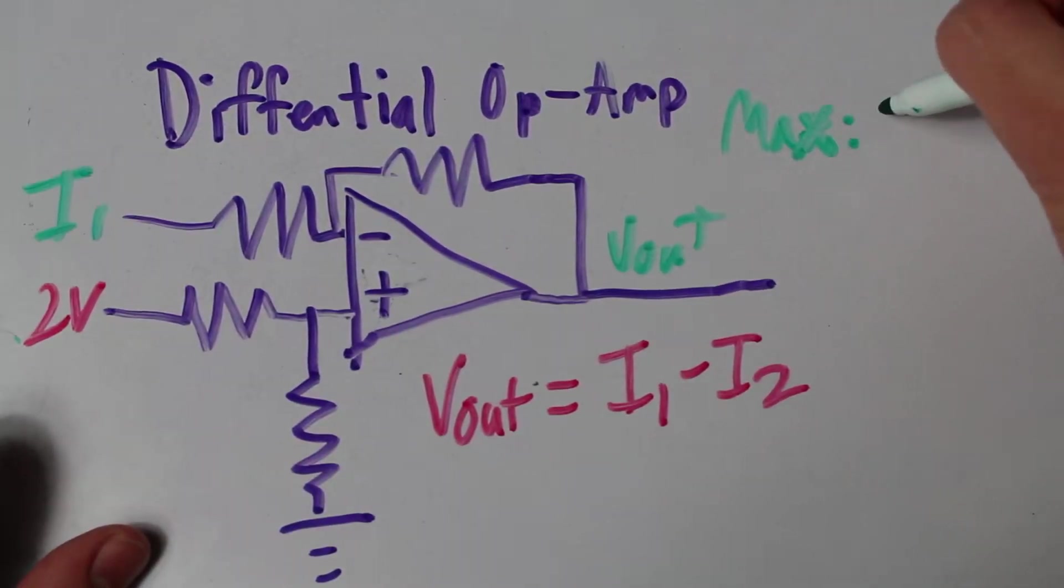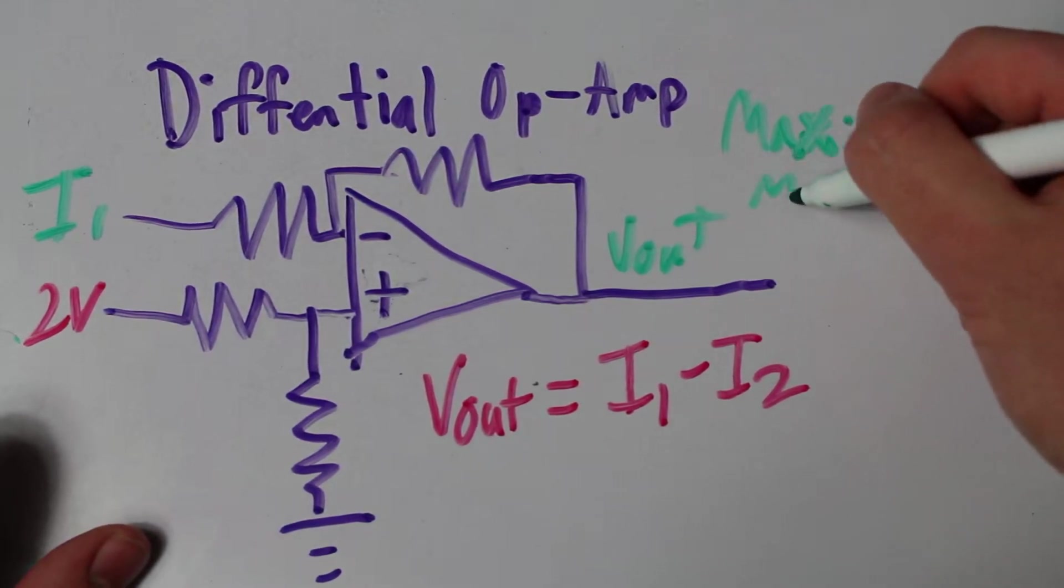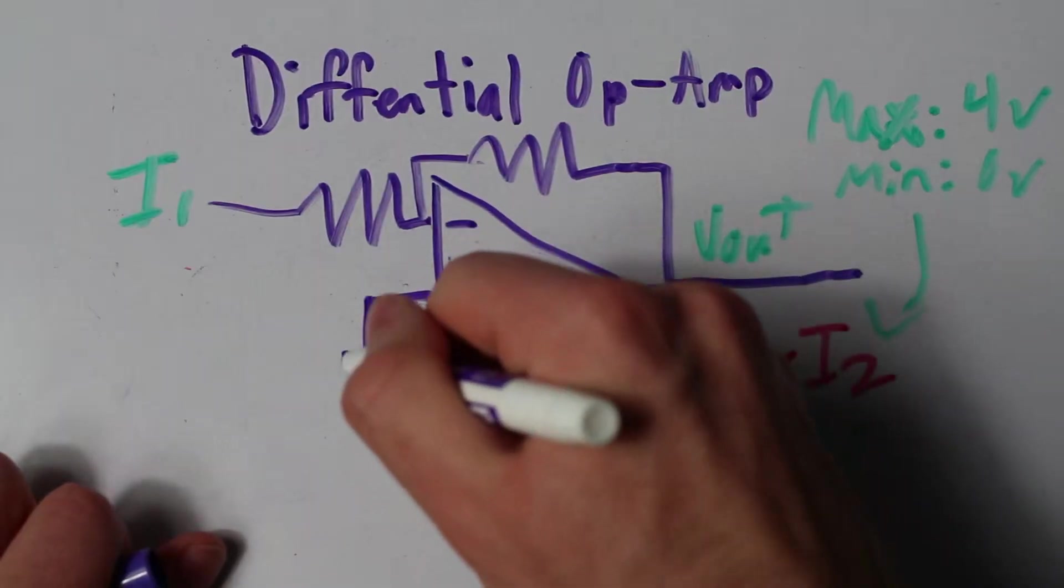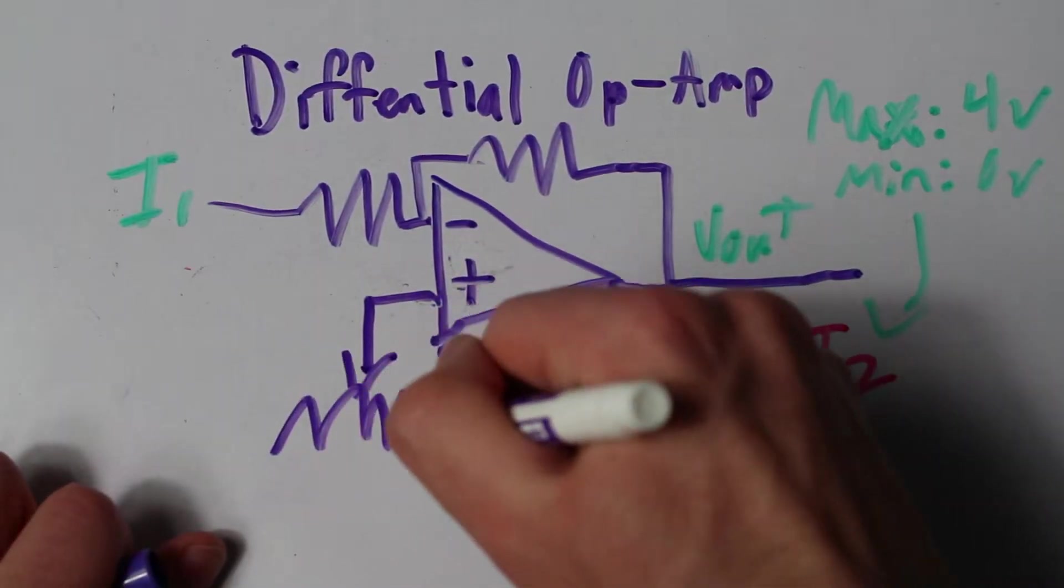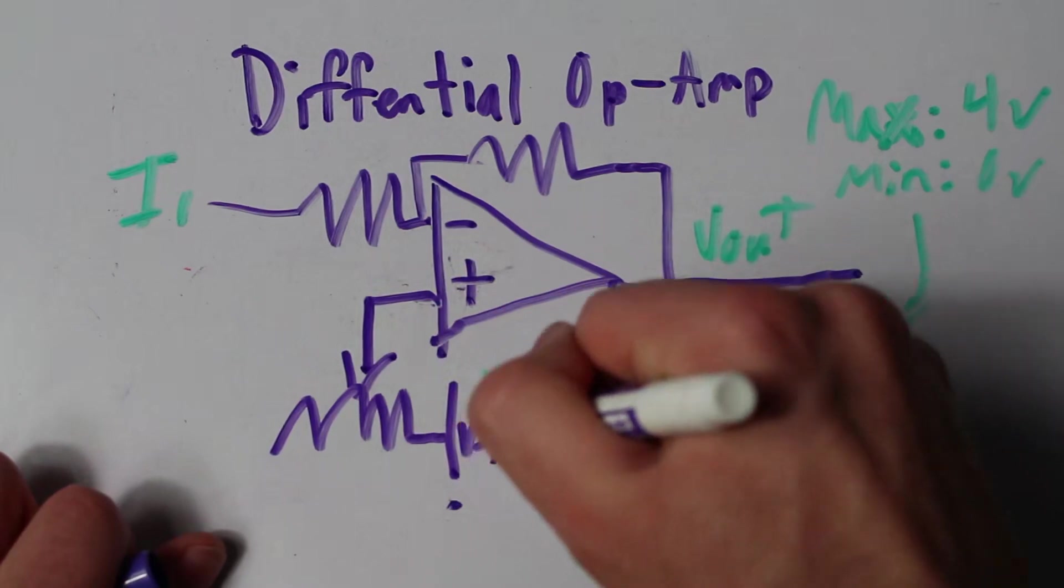So in other words, we simply offset the waveform by negative 2 volts to center around ground. We can create this 2 volt reference by simply using a potentiometer as a voltage divider. Just adjust it to be centered around 0 volts.